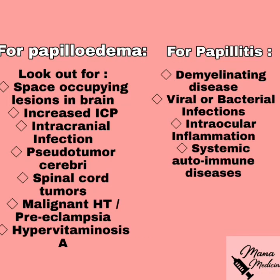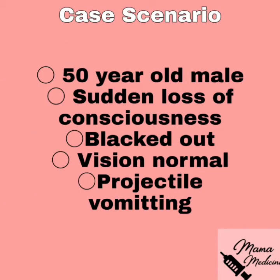Signs that further differentiate the two: space-occupying lesion, increased ICP, intracranial infection, pseudotumor cerebri, spinal cord tumors, pre-malignant hypertension, pre-eclampsia, and hypervitaminosis A all point to papilledema. For papillitis, the list is shorter: demyelinating disease, viral or bacterial infection, intraocular inflammation such as uveitis, endophthalmitis, or panophthalmitis, and systemic autoimmune diseases like systemic lupus or polyarthritis.